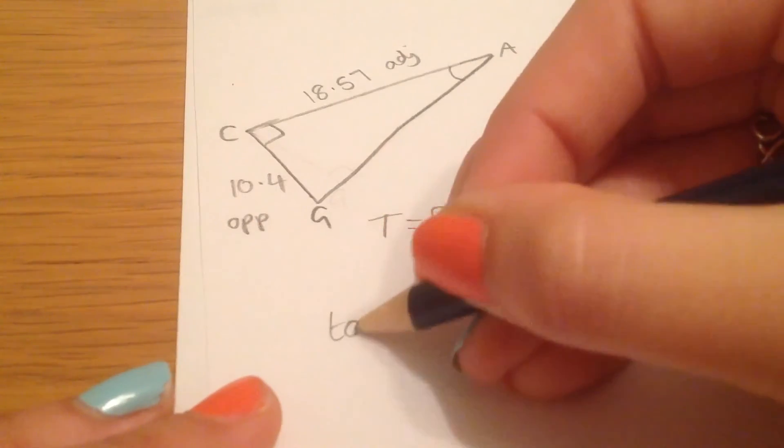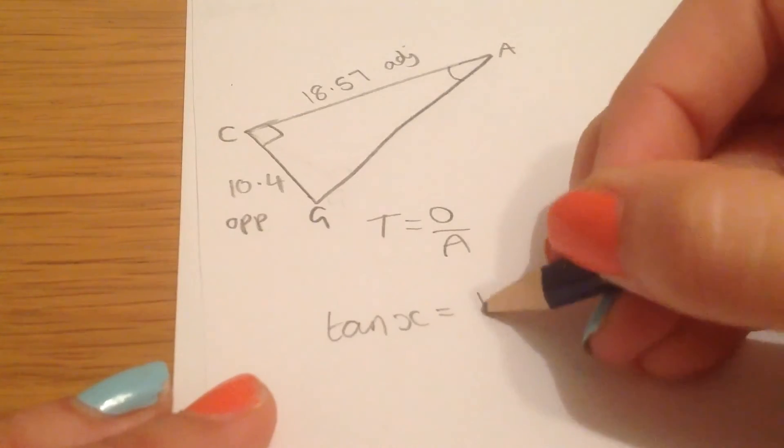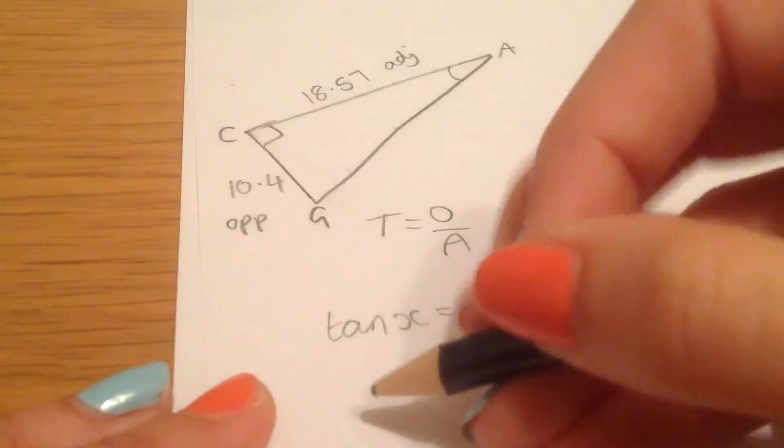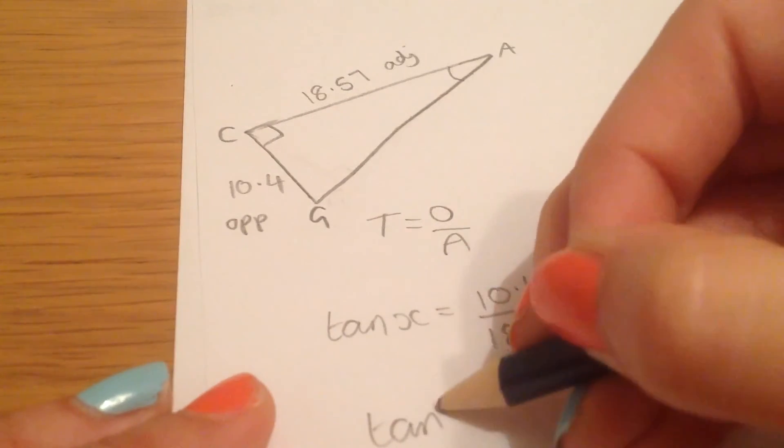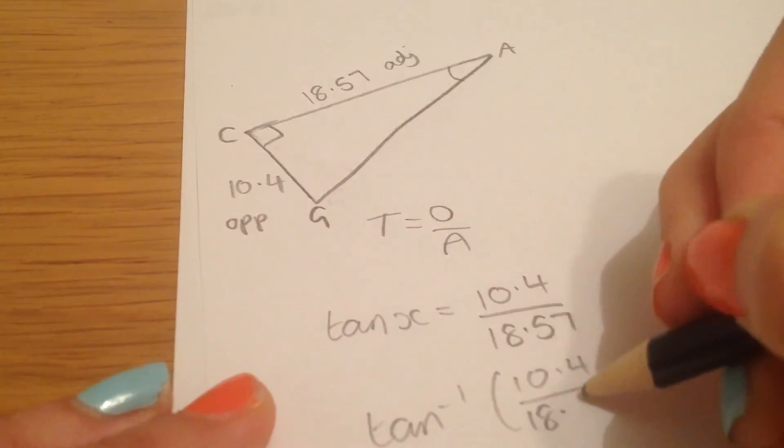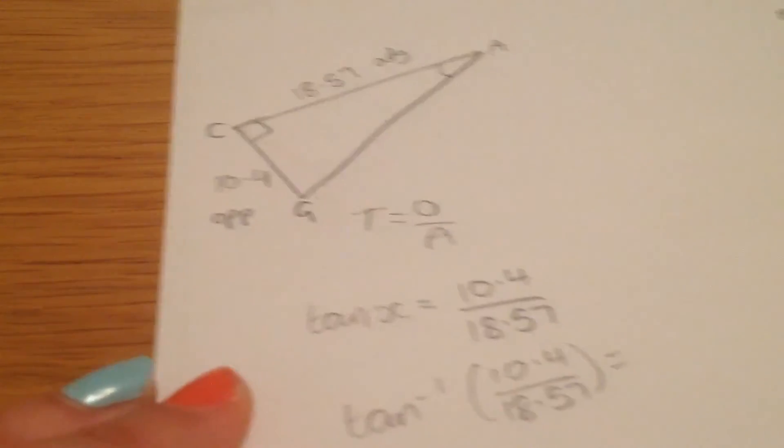Tan, for an unknown angle, is the opposite, 10.4 over 18.57, the adjacent. We're going to do tan inverse of that fraction, which gives us an angle of 29.3.